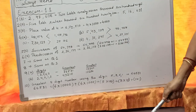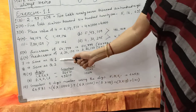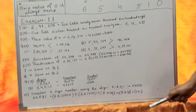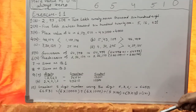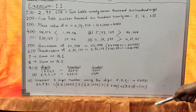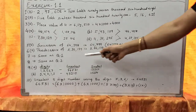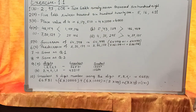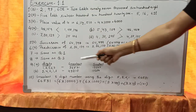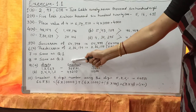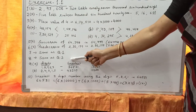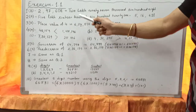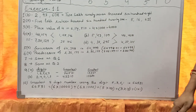Question No. 7 asks you to write the following numbers in words — this is the same as Question No. 1. Question No. 8 asks you to write the numbers in figures — same as Question No. 2.